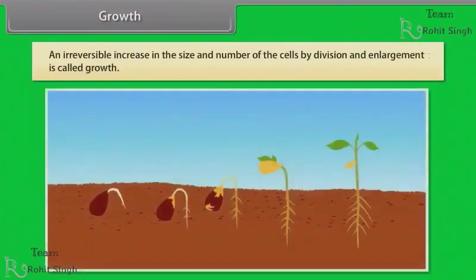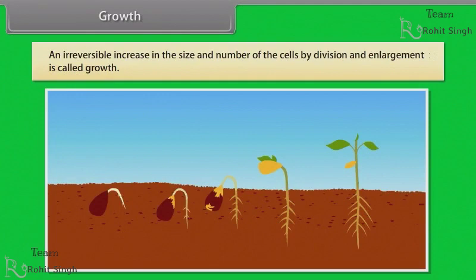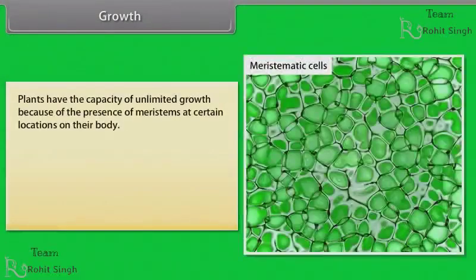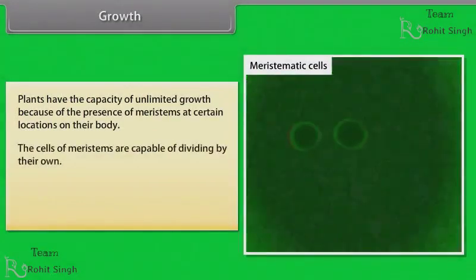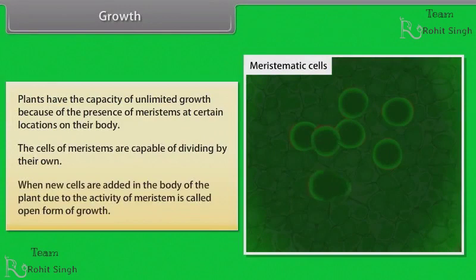An irreversible increase in the size and number of cells by division and enlargement is called growth. In plants, the growth generally is indeterminate. Plants have the capacity of unlimited growth because of the presence of meristems at certain locations on their body. The cells of meristems are capable of dividing by their own. When new cells are added in the body of the plant due to the activity of meristem, it is called open form of growth.